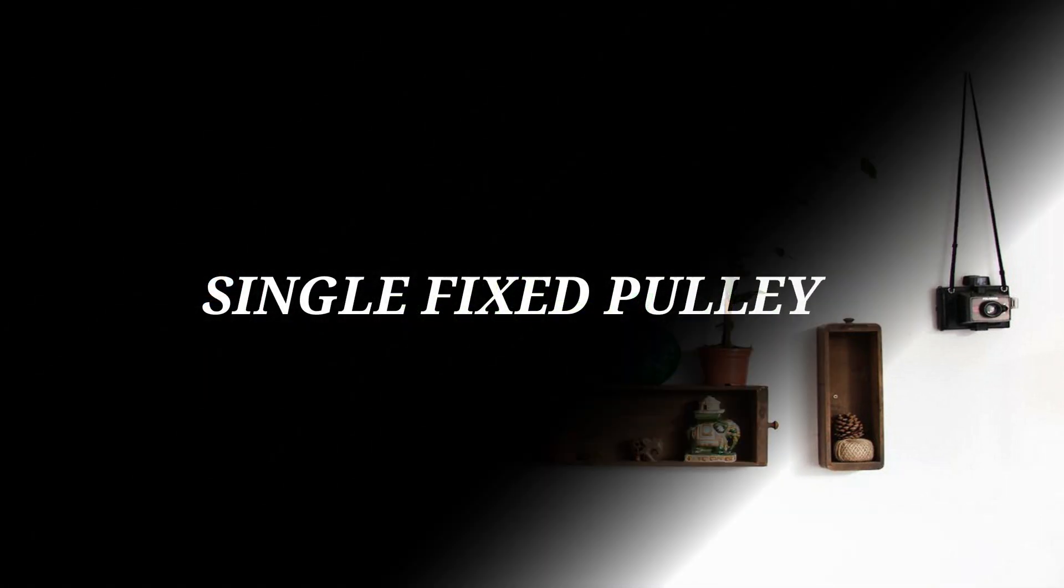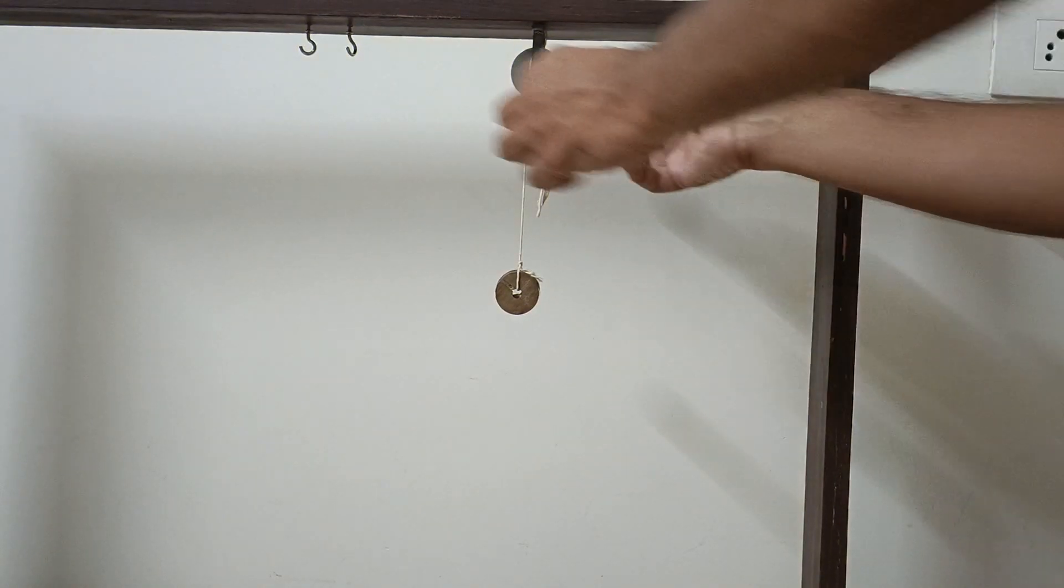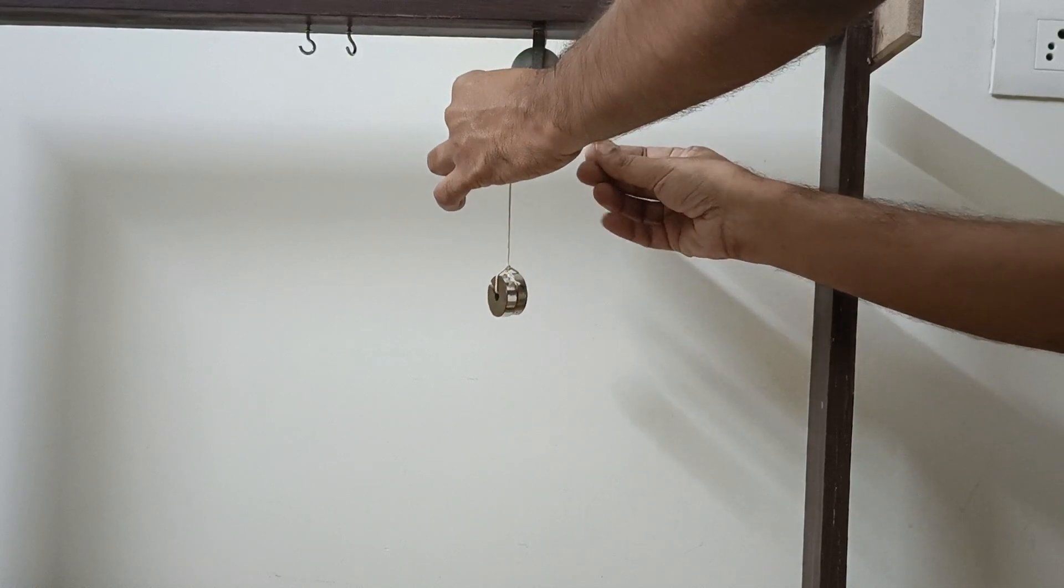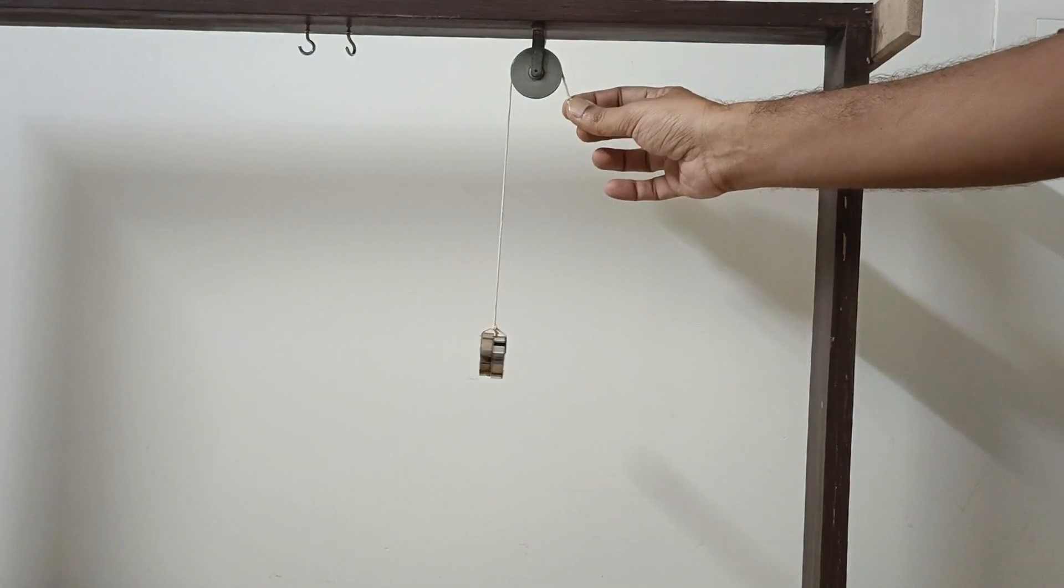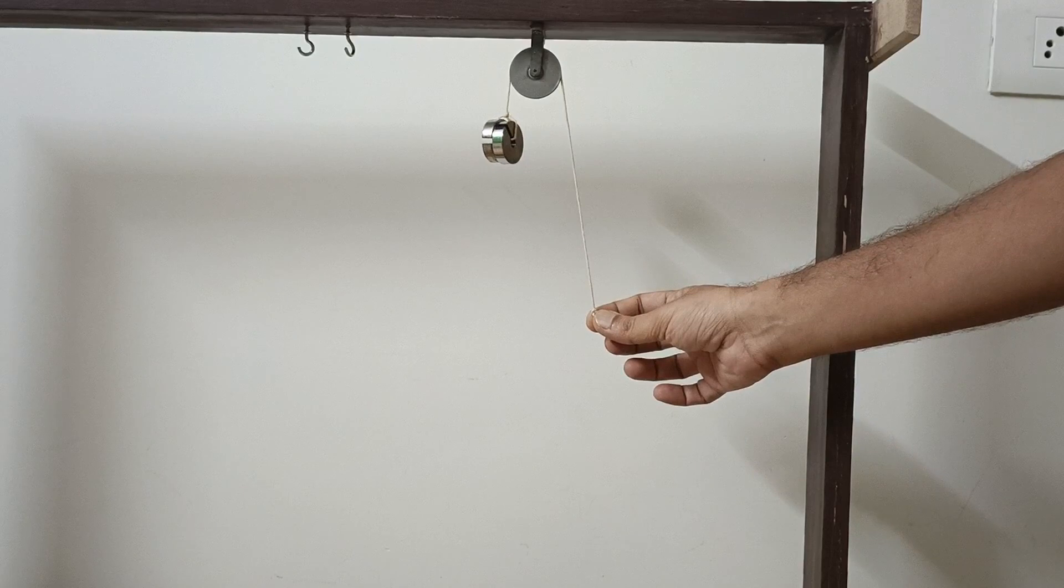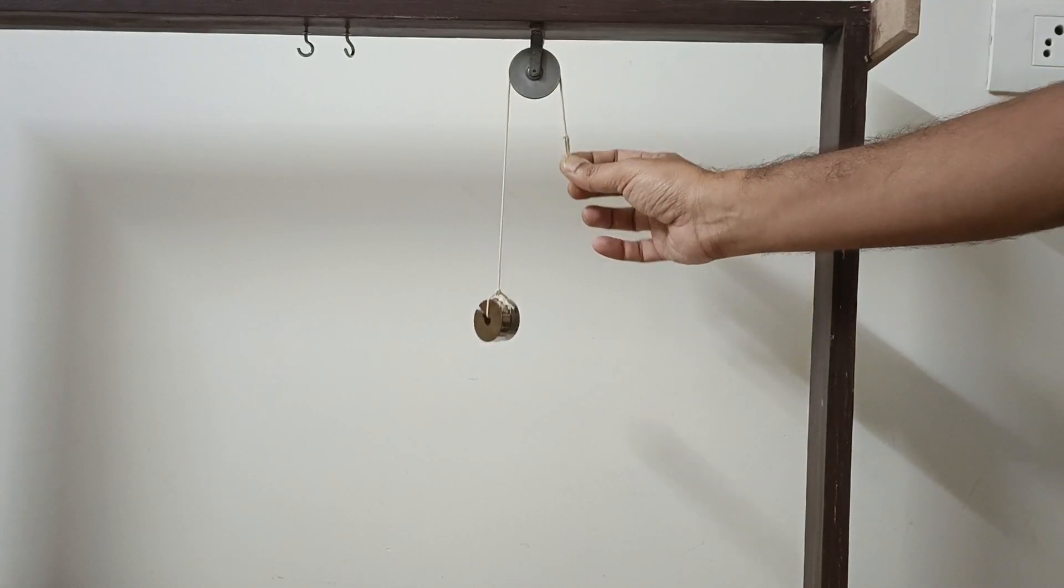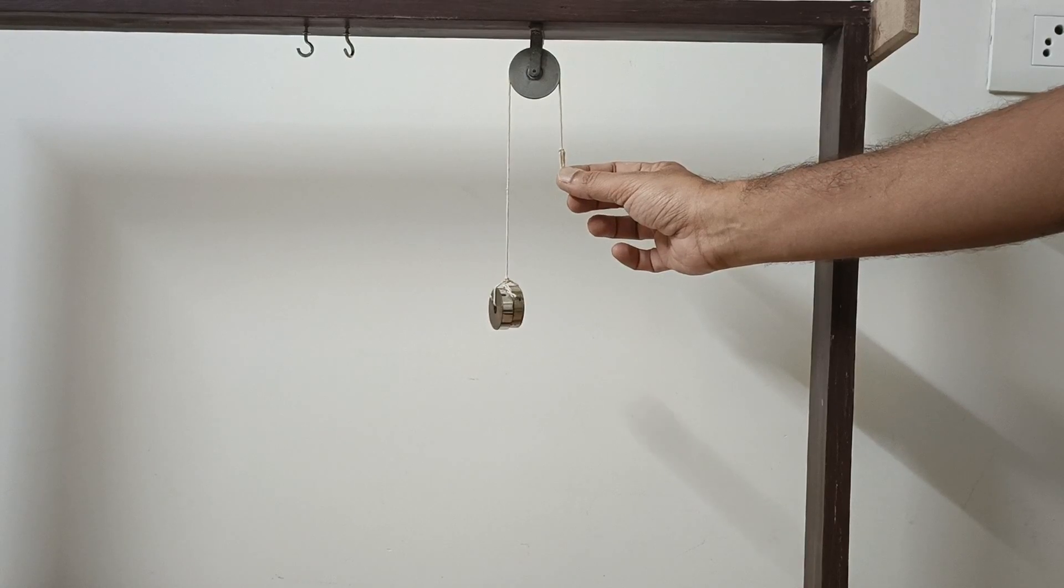So let's not waste any time and go to the demonstrations. Here we have a single pulley fixed on a wooden stand. A thin and inextensible rope carrying a load of 100 gram force is made to pass over this fixed pulley. The end of the rope near my fingers is the place where the effort is applied in the downward direction.